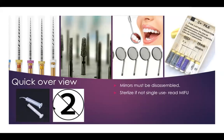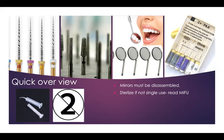We have a lot of instruments and materials. One thing I have to stress is that mirrors have to be disassembled — you cannot have the handle and the mirror together and sterilize them as one. You have to disassemble and sterilize separately, though you can have them in the same pouch. For endofiles, some manufacturers make them single-use and you will find the single-use symbol on them. Some are not single-use, so you can sterilize them. You must follow the manufacturer instructions.